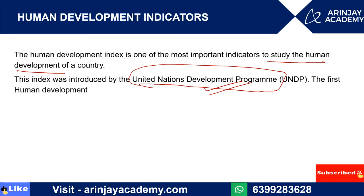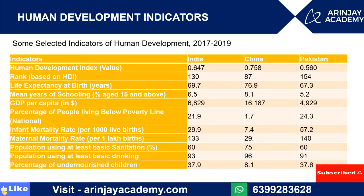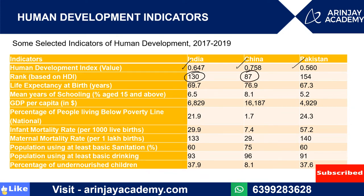Let's see the HDI indicators of India, China, and Pakistan. The HDI value of India is 0.647, China is 0.75, and Pakistan is 0.560. The HDI rank of India is 130, China is 87, and Pakistan is 154. So China has the best HDI rank and value, followed by India, and then Pakistan.